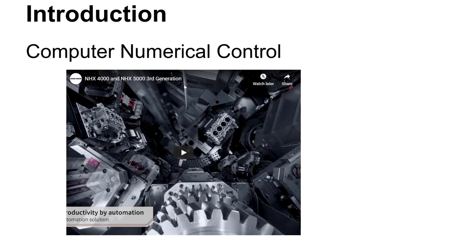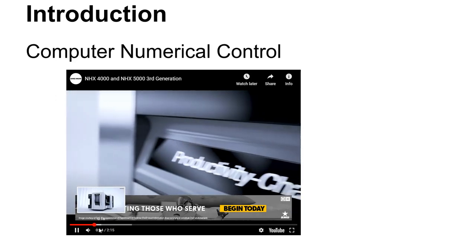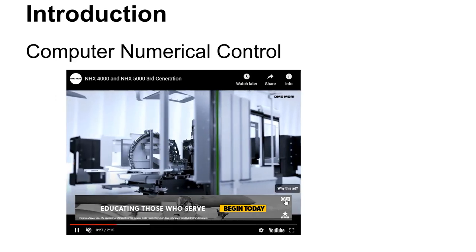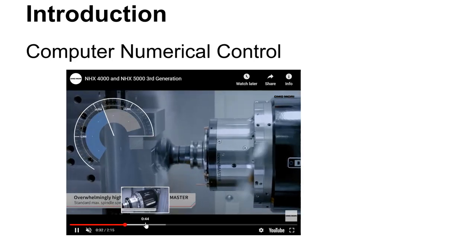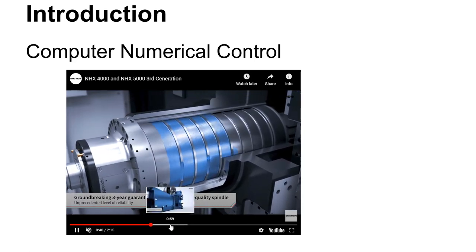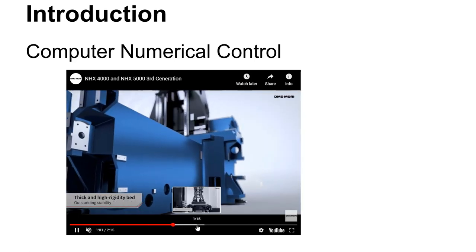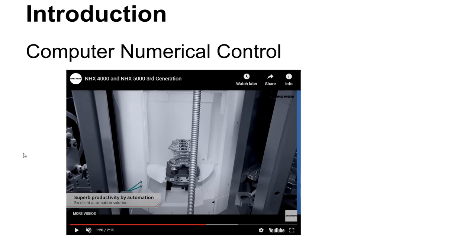So computer numerical control, you've seen the videos on YouTube and things like that. There's some pretty interesting technology out there, and I'll just kind of scrub this timeline a little bit. This is a DMG Mori video. They've got some pretty good videos out there. This is a pretty neat machine right here. I'm just going to ask you to kind of go through and watch that. There's some pretty nice features and options on there. We'll be talking about some of those things like this palette changer that I've stopped on here.